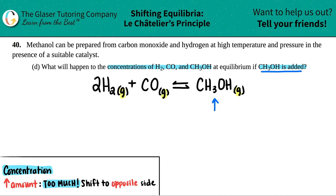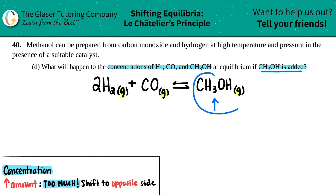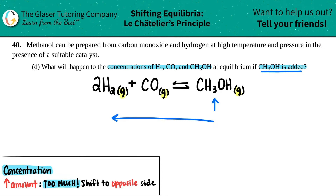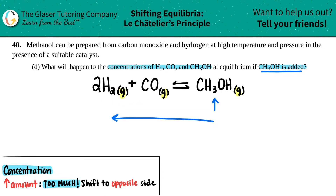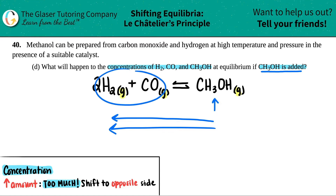Here's the rule: if you have way too much — you increased it — you have to shift to the opposite side. Since you increased on the product side, you have to shift to the opposite side, aka the reactant side. And if you go this way, you will drop the product and you'll add to the reactants.